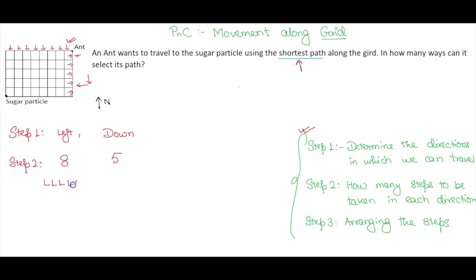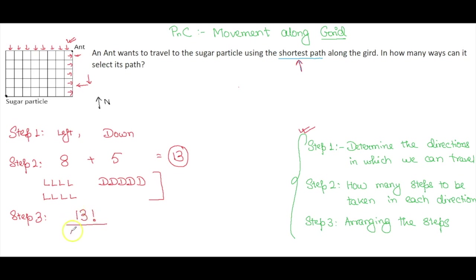The leftward steps are denoted as L — so we have eight L's — and the downward steps are denoted as D — so we have five D's. Step three: we have a total of 13 steps to arrange. Any arrangement gives a valid shortest path — a left then a down, two lefts then a down, and so on. The number of ways to arrange these 13 letters is 13! divided by (5! × 8!). All movement along grid questions can be solved easily with this three-step approach.